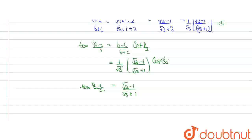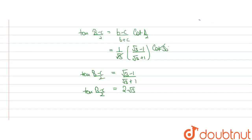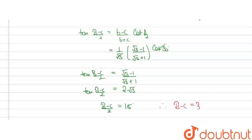So, further solving, we will get tan((B - C)/2) is equal to 2 - √3. Taking inverse tan on both sides, we will get (B - C)/2 is equal to 15 degrees. Therefore, B - C is equal to 30 degrees.